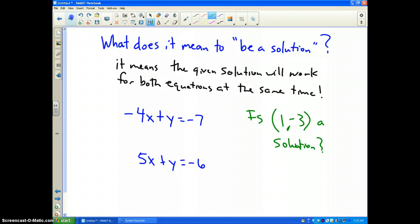Well, the way you check that is you put 1, negative 3 in for both of them. I am going to write the first equation again, but I am going to substitute a 1 in for x and negative 3 in for y. Does that work? If we check it, negative 4 times 1 is negative 4 plus negative 3. Does that equal negative 7? Yes, it does. So that checks.